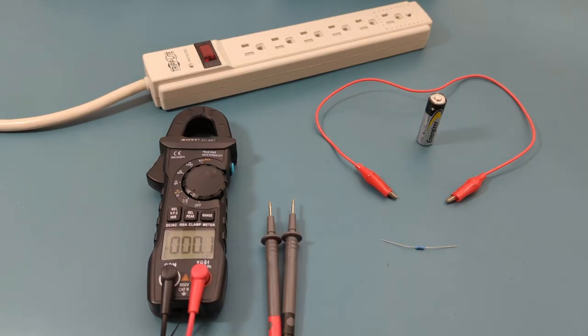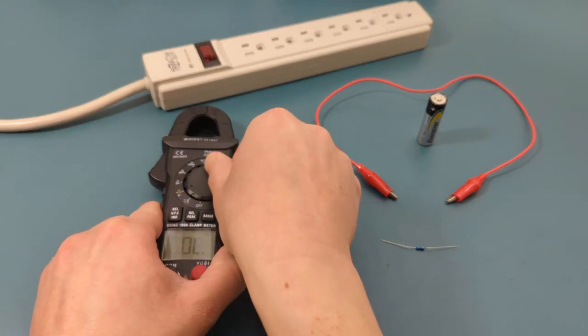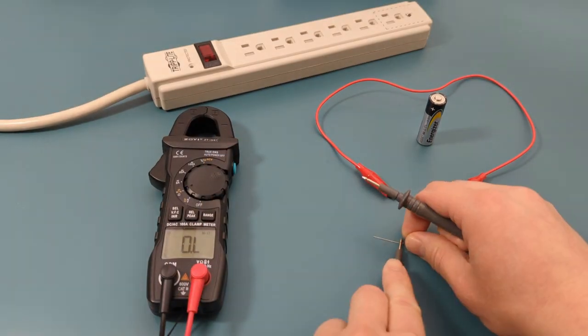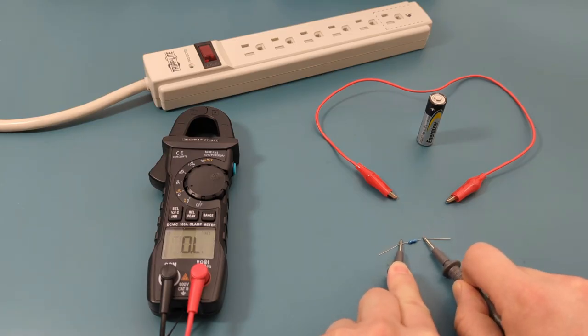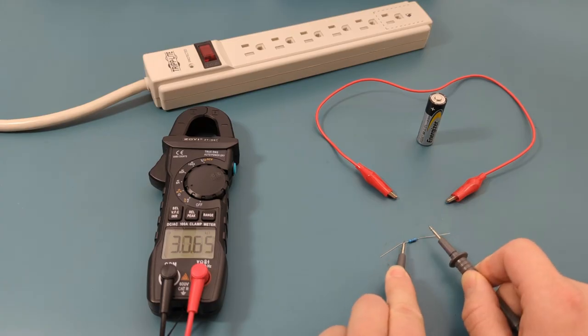The next test is to check the resistance of this 3300 ohms resistor. Turn the dial to the resistance setting. The reading shows around 3300 ohms, which is what we expected.